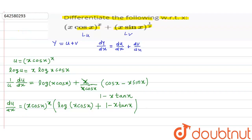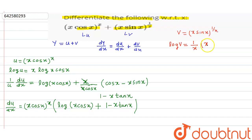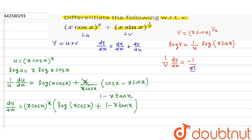Now find dv/dx. v is equal to x·sin(x) to the power 1/x. Taking log of both sides: log v = (1/x)·log(x·sin x). Now differentiate both sides. We get 1/v · dv/dx equals minus (1/x²)·log(x·sin x) plus (1/x) times the differentiation of log(x·sin x).